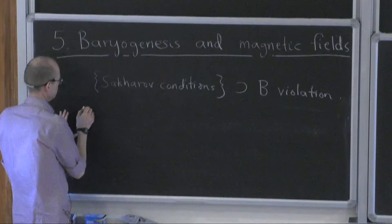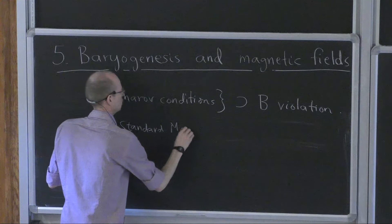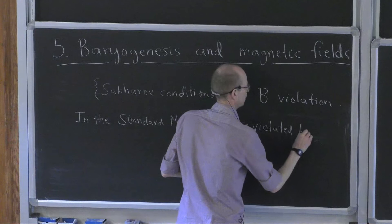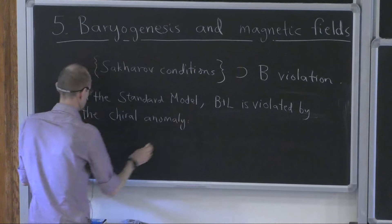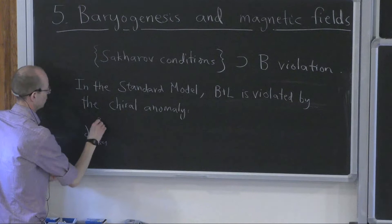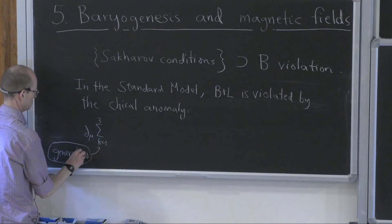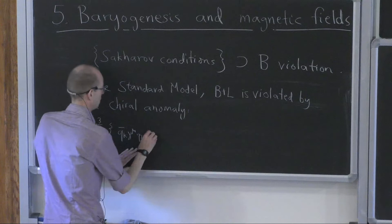The starting point is that in the standard model, baryon plus lepton number is violated by the chiral anomaly. I will now write an equation. This is a divergence of a current where one sums over the generations, and then over quarks and leptons.